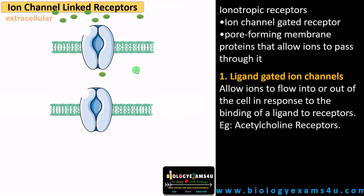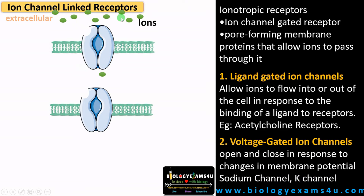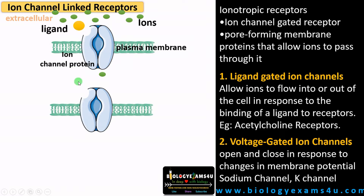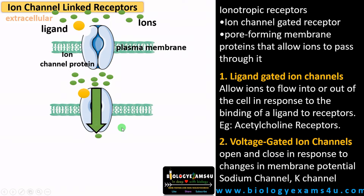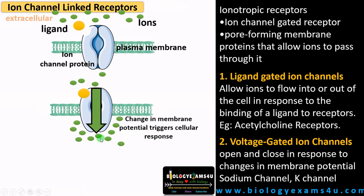The first type is called ligand-gated ion channels. It allows movement of ions upon binding of a ligand or signaling molecule. So there are ions on the extracellular side, and this is a ligand or signaling molecule like acetylcholine binding to the ion channel protein. On binding of this ligand, the protein is activated, causing the opening of the channel, permitting the movement of ions into the cell. This creates a change in membrane potential or change in concentration of ions across the plasma membrane that triggers a cellular response.